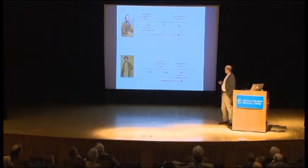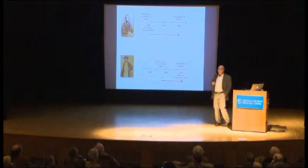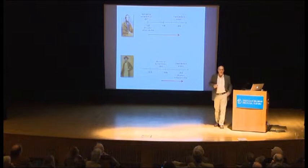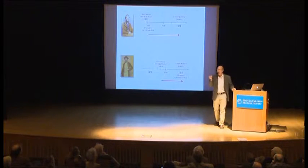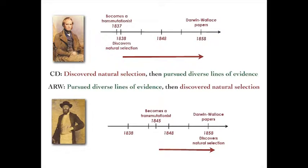Wallace, on the other hand, about 14 years Darwin's junior, comes to transmutation later and doesn't have a mechanism at first — he's after the solution of how species change. But his path is the inverse of Darwin's. He has the conviction of transmutation and pursues lines of evidence, and only later does he hit upon the mechanism.